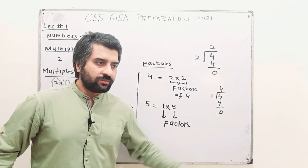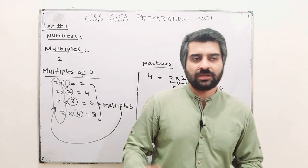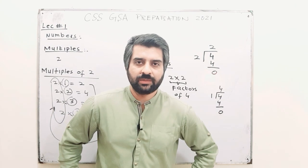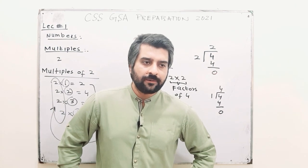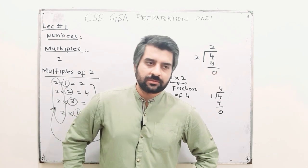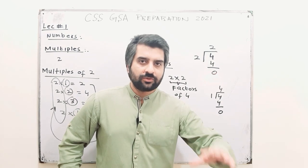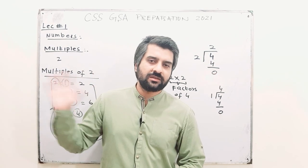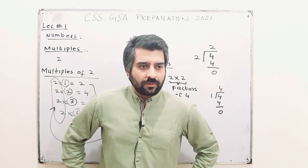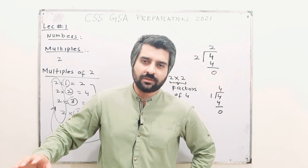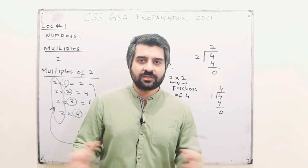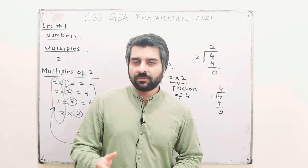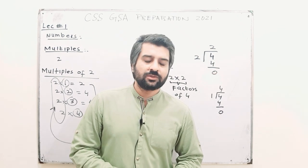I will conclude my lesson up till here. I just discussed the overview of the General Science and Ability paper, and I have started from numbers in the arithmetic section. I will keep on sharing lectures, so keep watching. You can comment for your inquiries. I want to highlight that this may appear very simple to many of you — this is simple but not for everyone. The purpose of explaining in detail is that every one of you should get my point. I hope you will appreciate my effort. Keep watching, thank you so much.